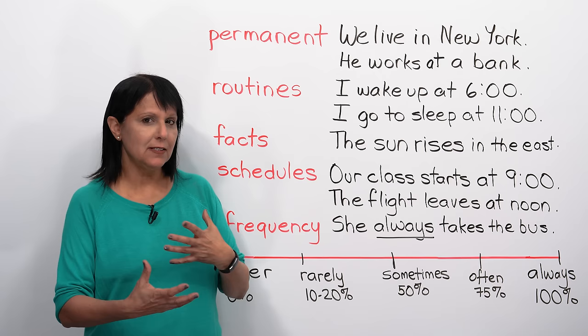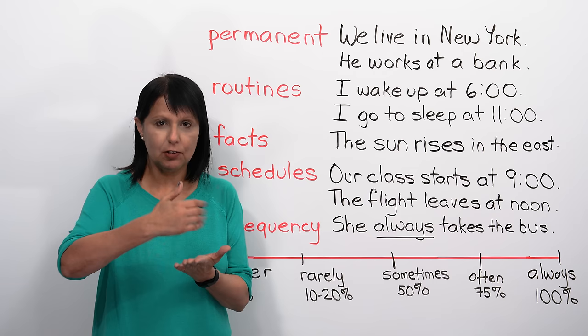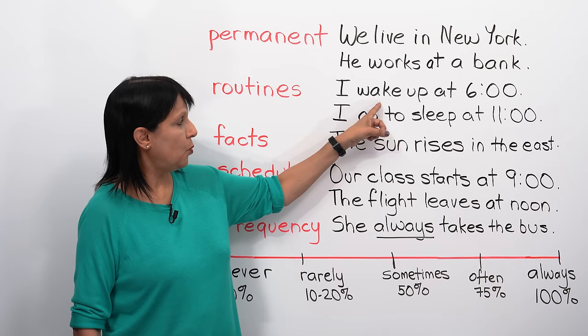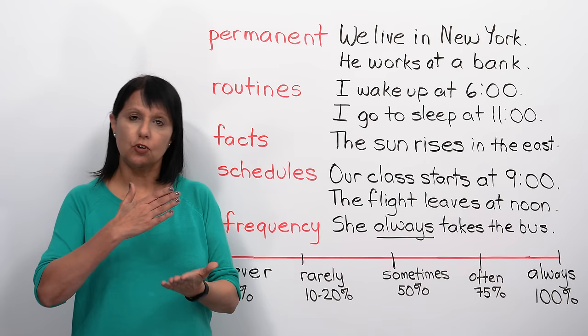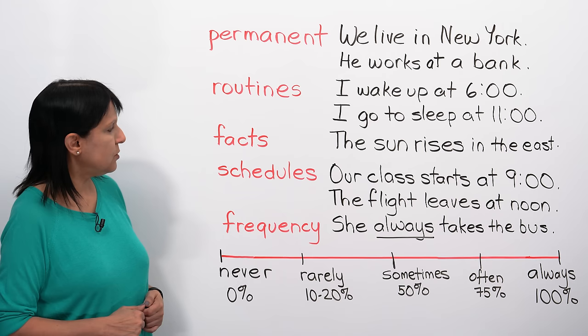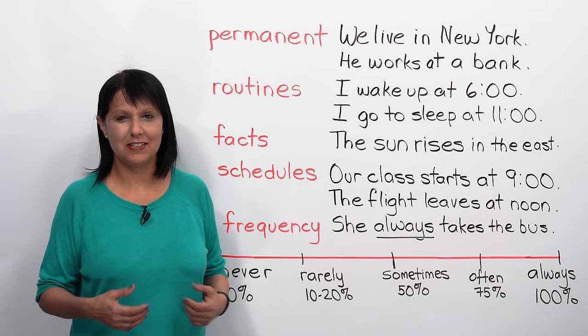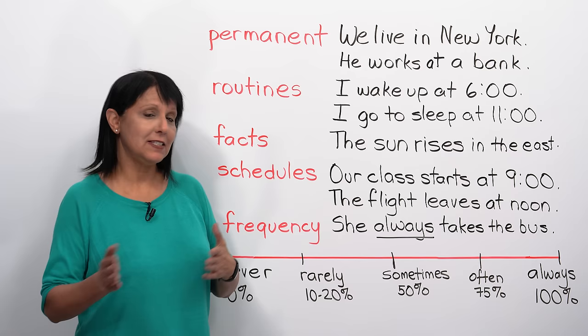Let's look at another situation in which you can use the present simple tense: for routines. A routine is something you do regularly. For example, I wake up at six o'clock every day. I go to sleep at eleven. Wake, go - these verbs are in the present simple tense because they're talking about a regular activity, a routine. We can also use this tense to talk about facts. For example, the sun rises in the east - it's just a fact, a scientific truth. We could also say the sun sets in the west.